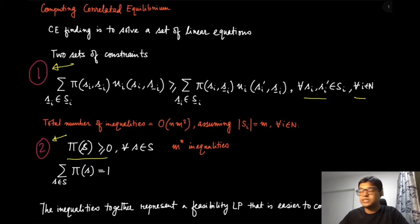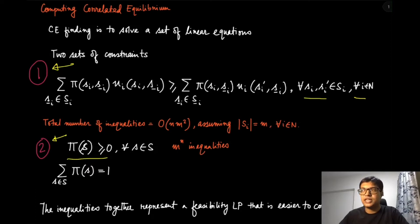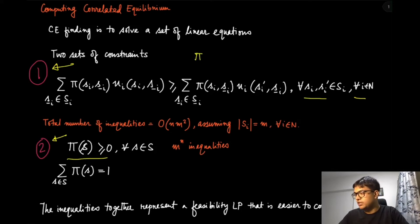Notice that instead of the variables being individual probability masses over all strategies of a specific player, the correlated strategy is a probability distribution over strategy profiles. Therefore the optimization variables here are just pi(s).